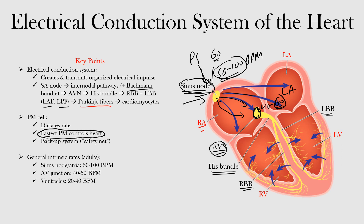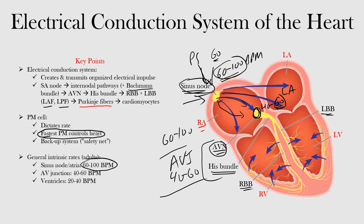Some good cutoffs to remember: the sinus node and atria fire between 60 and 100 beats per minute; the AV junction — meaning the AV node and His bundle — fires between 40 and 60 beats per minute; and the ventricles fire between 20 and 40 beats per minute. These ranges are important rules to know as we move forward.